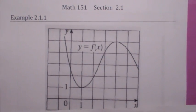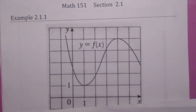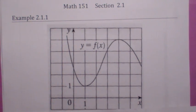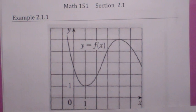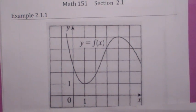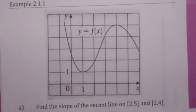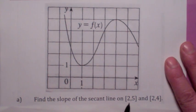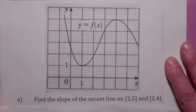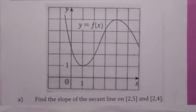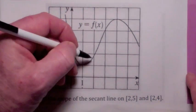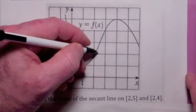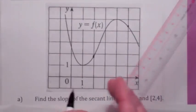In this first section, we're actually going to introduce the central topic of the whole course. We're going to talk about slopes of secant lines and slopes of tangent lines from various points of view. Let's suppose first of all we have a graph. When the question asks, find the slope of the secant line on the interval 2 to 5, that means from x equals 2 to x equals 5 — they want you to find the slope of this line right here.